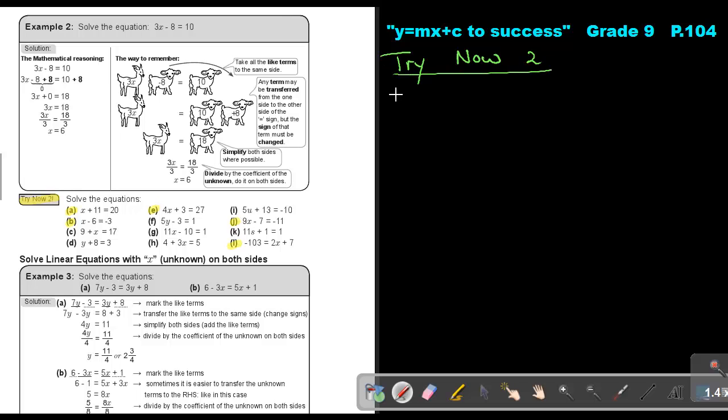And we are going to start with number A. So number A, I'm first going to do using the grade 8 method. Now if you look at like terms, this is having a variable. This is a constant and a constant. So this constant must go to this side. What I did in grade 8, I was subtracting 11 and I was subtracting 11 on both sides. And then this was canceling and I was just having X equals 20 minus 11 and the value of X was equal to 9.